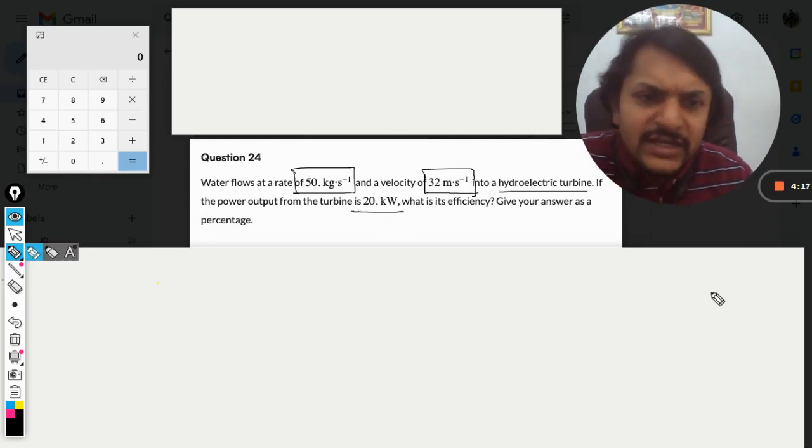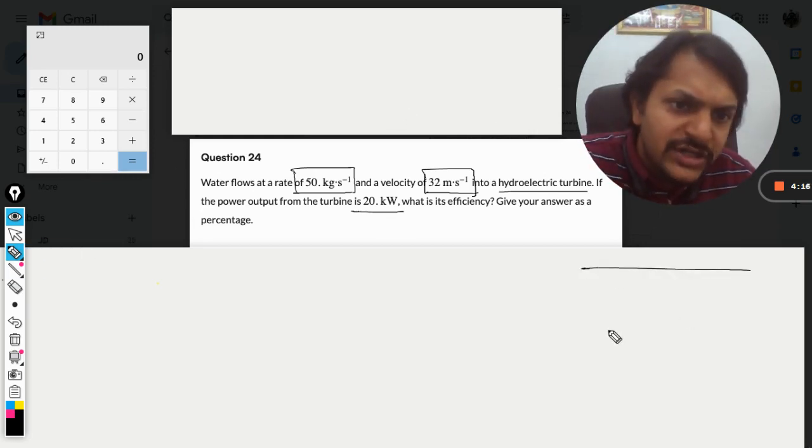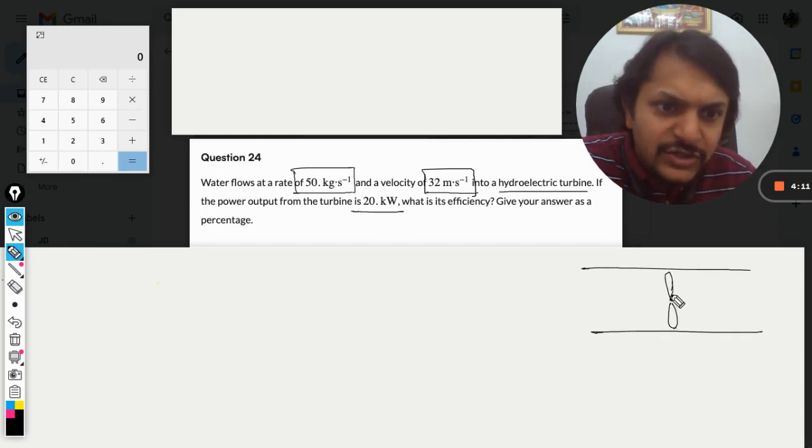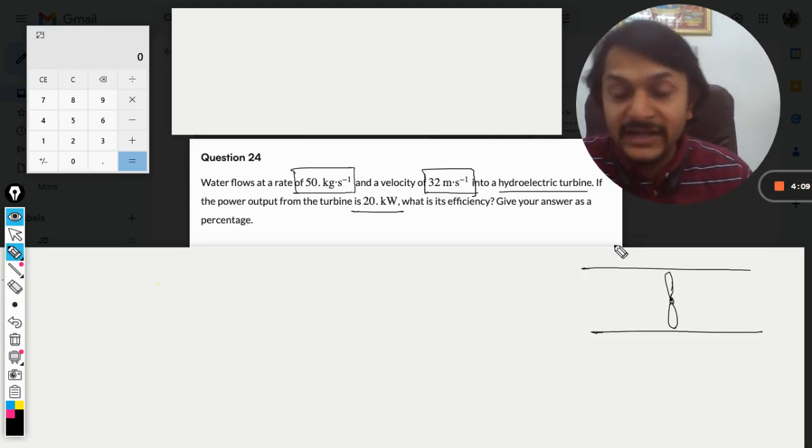What is happening here is there is a conduit or a tube, and there is this big fan. This is basically a turbine - this is how we show it.